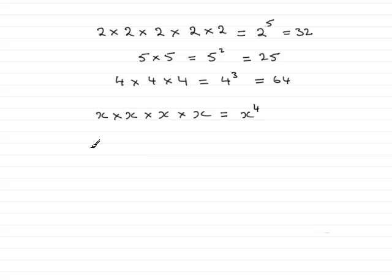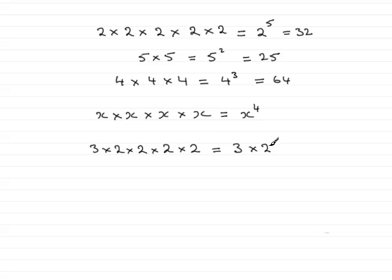Sometimes we might have a number in front of a repeated multiplication other than the repeated number. Suppose I had, for instance, 3 times 2 times 2 times 2 times 2. I could write this as 3 times 2 to the power 4. And if we were asked to work this out, don't make the mistake of thinking that this is 3 times 2, which is 6, to the power 4. No, you've got to work out 2 to the power 4 first of all. 2 to the power 4 is 16, and 3 16's are 48.